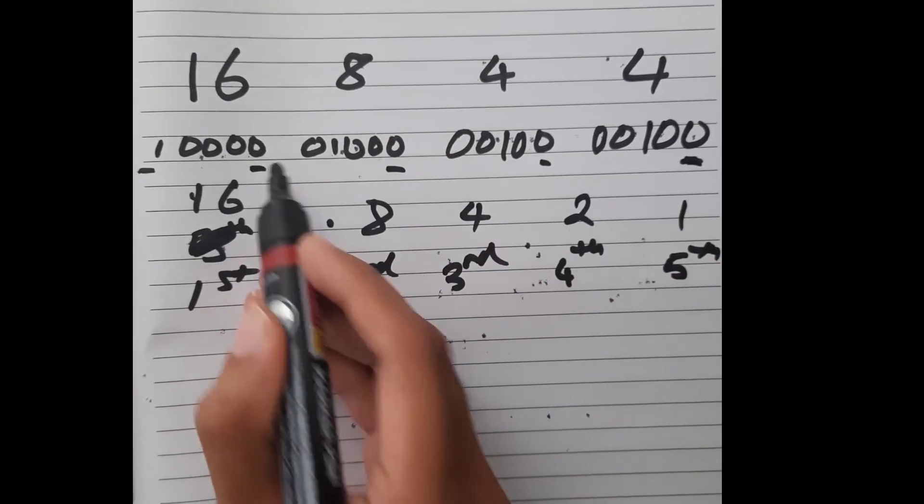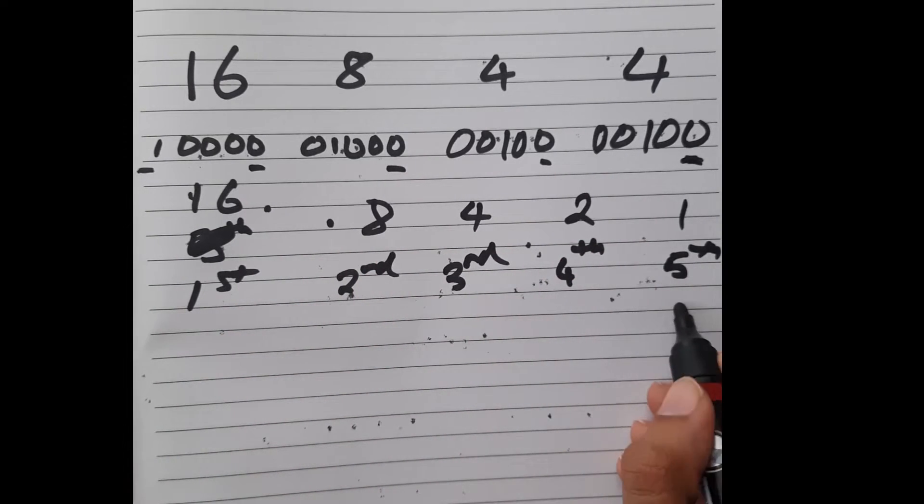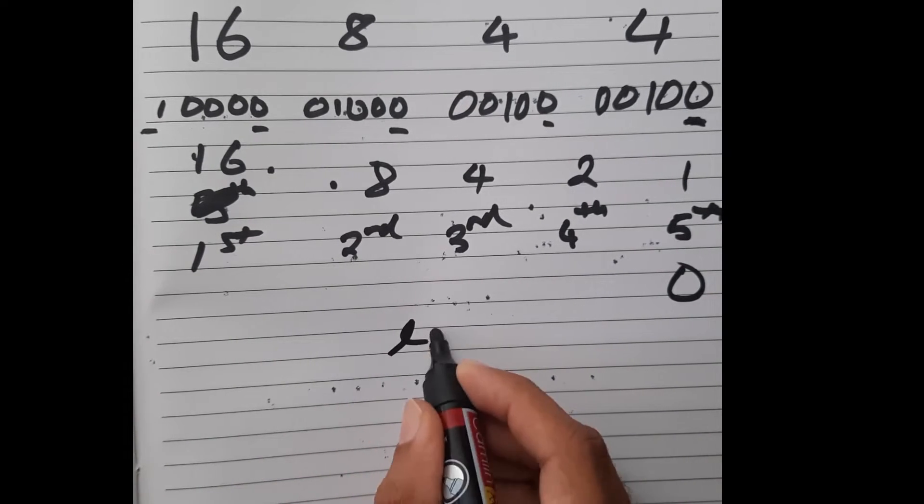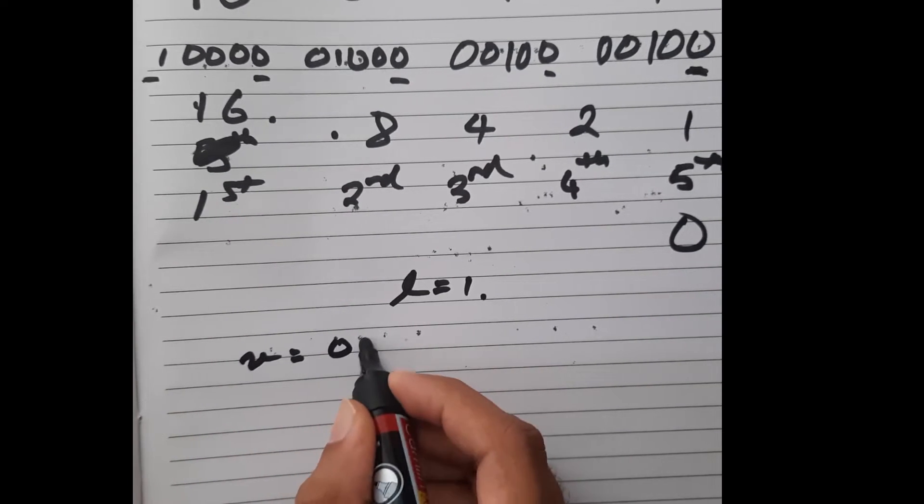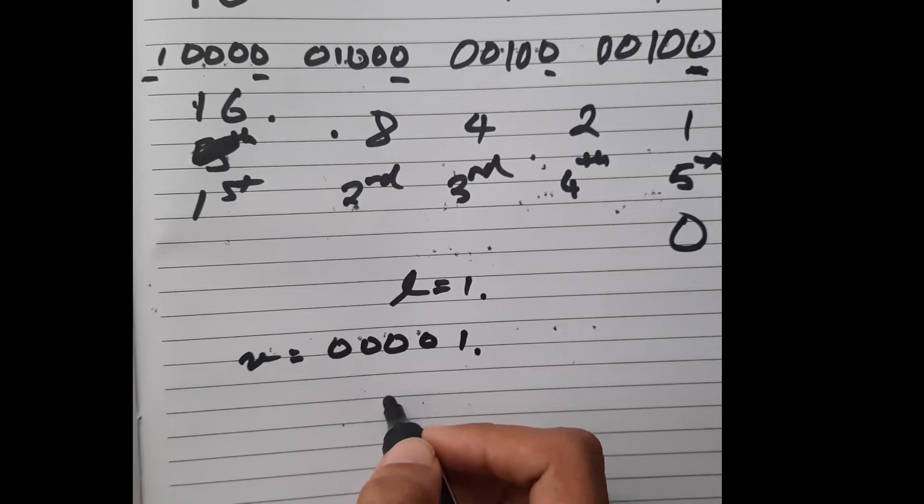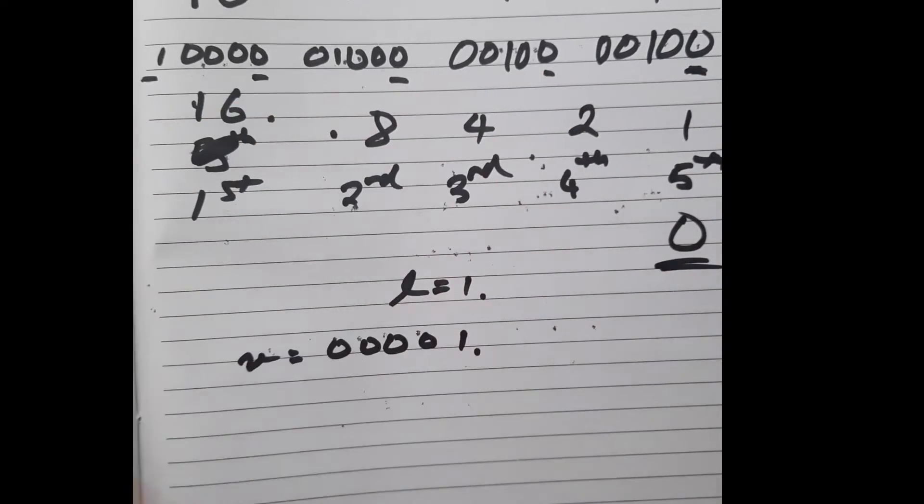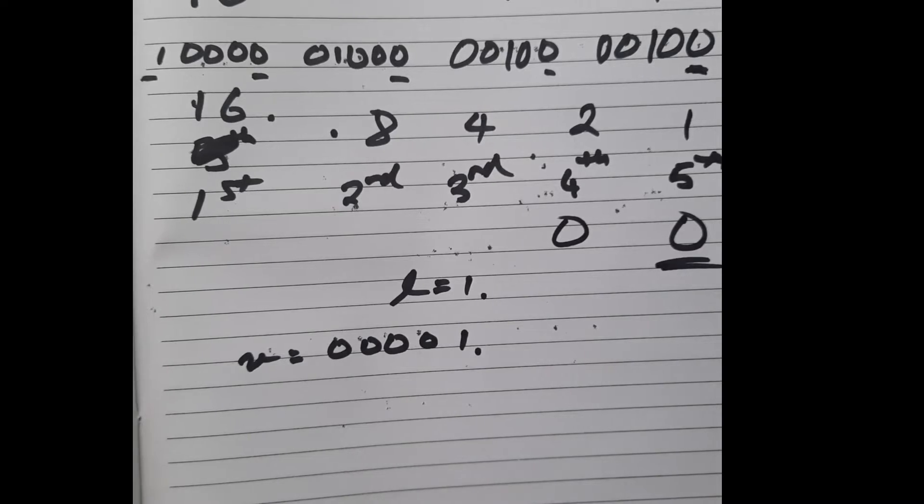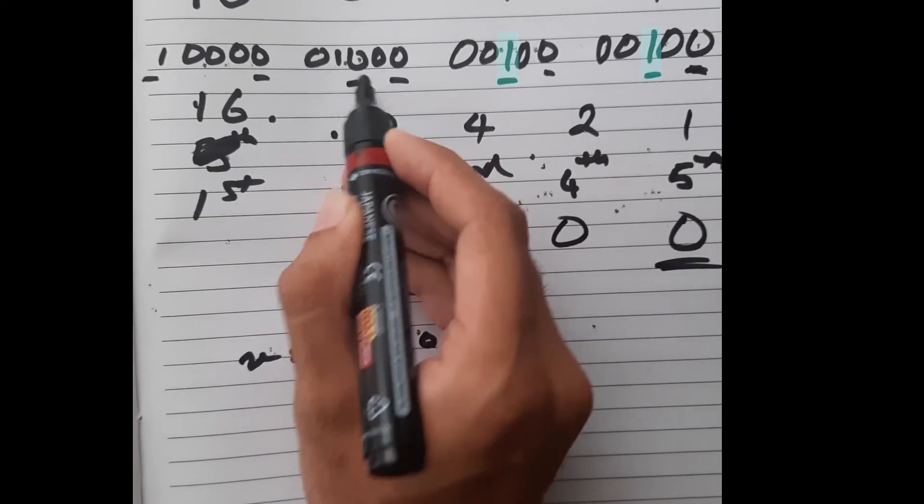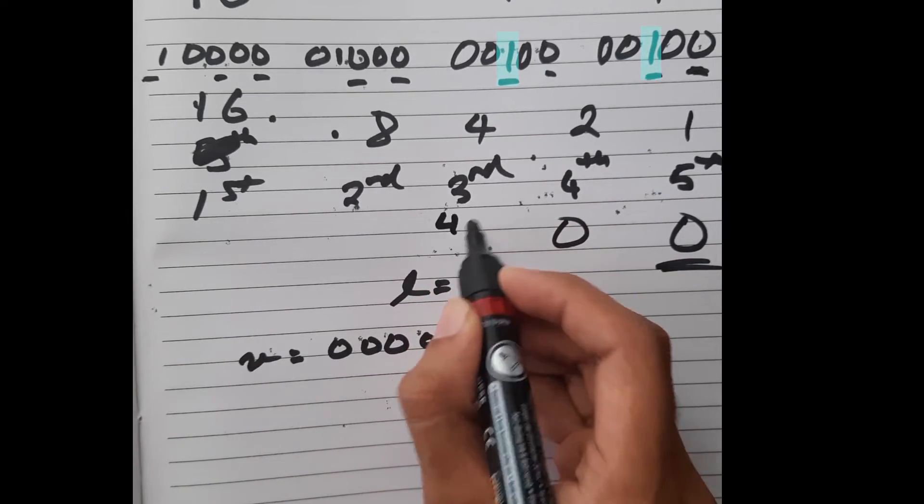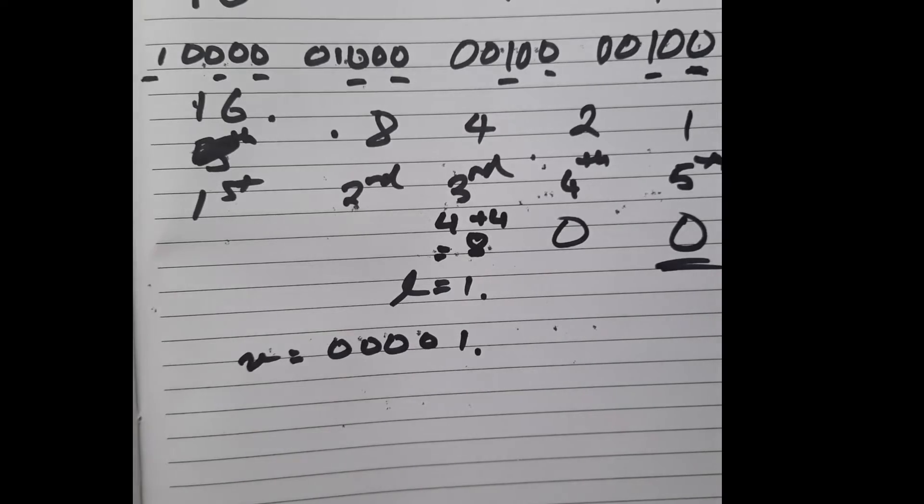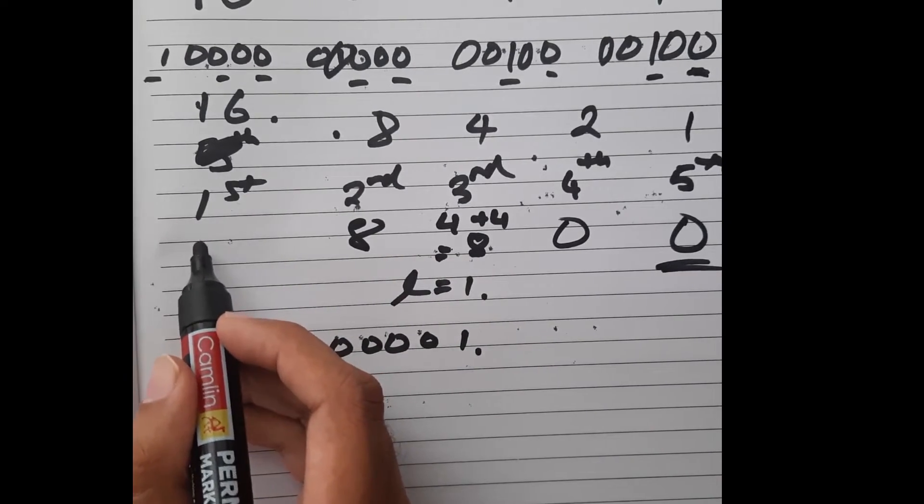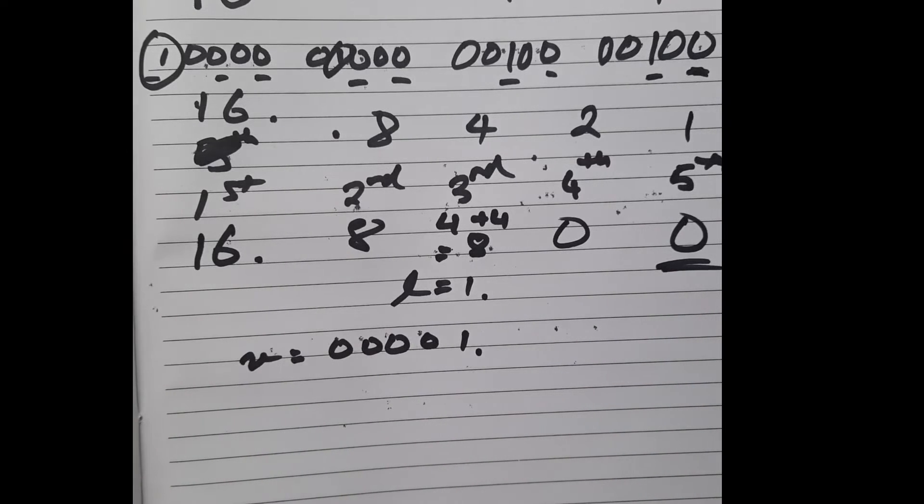Let's figure out how much each of these bits contribute. If we look at all the fifth bits, none of them are set. This contributes 0. The fourth bits, none are set, so 0. The third bits have two values set, contributing 4 plus 4, which is 8. The second bit contributes 8 because only 1 is set. And finally, the first bit, the most significant bit, only 1 is set, so this contributes 16.